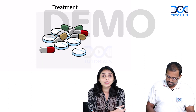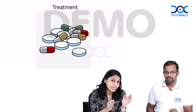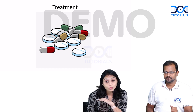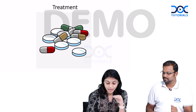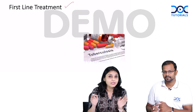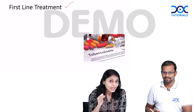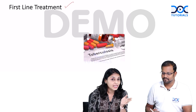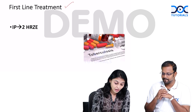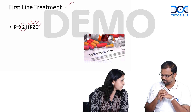Let us talk about the treatment of TB. TB treatment can be divided into drug-sensitive TB regimen and drug-resistant TB regimen. Drug-sensitive means a person who is sensitive to all the first-line treatment. For drug-sensitive TB, we give first-line treatment, given in two phases: intensive phase and continuation phase. In the intensive phase, we give four drugs — INH, rifampicin, pyrazinamide, and ethambutol — for two months as a daily regimen.